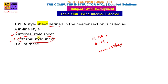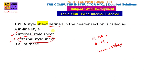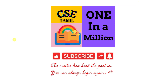CSS has three types: inline, internal, and external. Inline is applied to a specific element with style defined directly. Internal is defined in the head section. External is in a separate file linked in the head section via a link tag. If you want to answer this question, you can write in the comment box. That's it, thank you, thanks for watching.